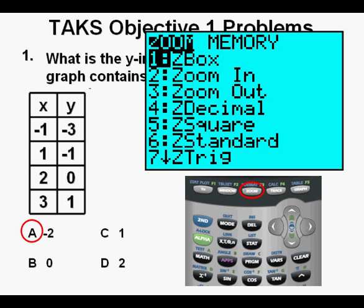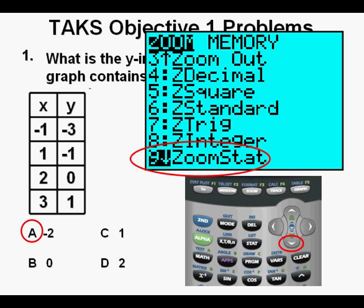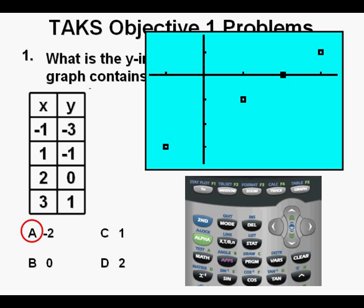Press GRAPH. We see the points lined up. To get a better view we can zoom in on the data by pressing ZOOM, then arrow down to zoom menu choice 9, ZoomStat. Press ENTER.